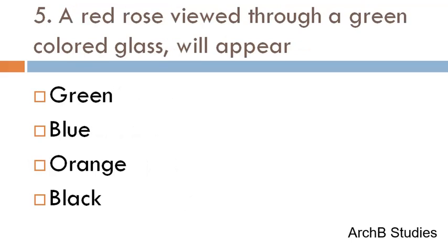A red rose viewed through a green coloured glass will appear — green, blue, orange, or black? The correct answer is black.